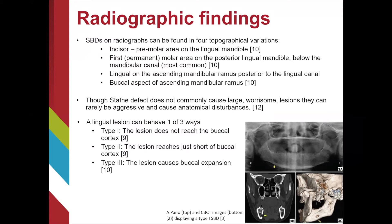As previously stated, SBD can cause anatomical disturbances such as buccal plate expansion. If given a CBCT of the defect, we can categorize the defect into three types based on its depth into the mandible. Type 1 means the defect has penetrated the lingual plate but is nowhere near the buccal cortical plate. Type 2 means the lesion is near the buccal cortical plate. And type 3 means the lesion has pierced the lingual cortical plate and caused the expansion of the buccal cortical plate.